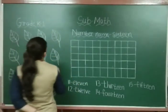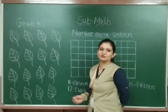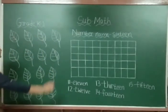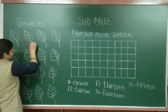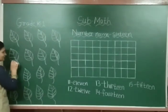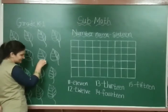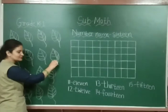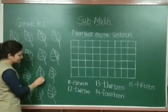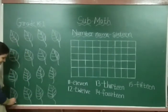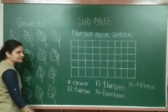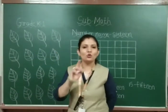Now see here. What is this? This is a picture of leaves. Now we have to count how many leaves we are having here. So come with me — 1, 2, 3, 4, 5, 6, 7, 8, 9, 10, 11, 12, 13, 14, 15, and 16. How many leaves do we have here? 1, 6 — 16.